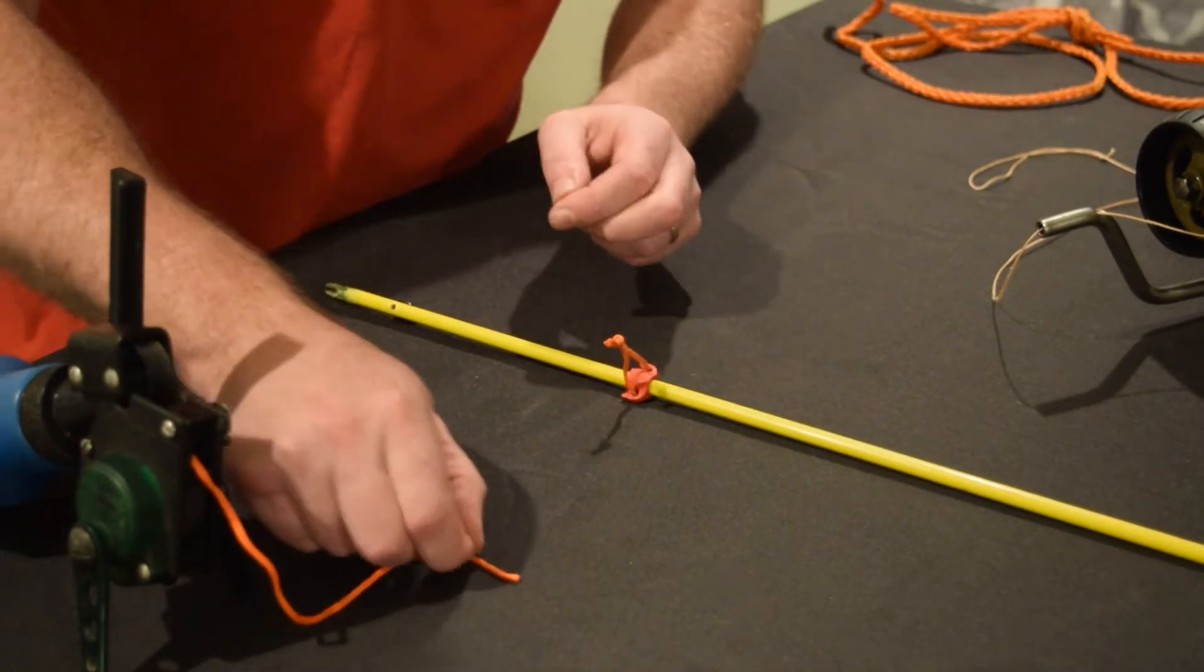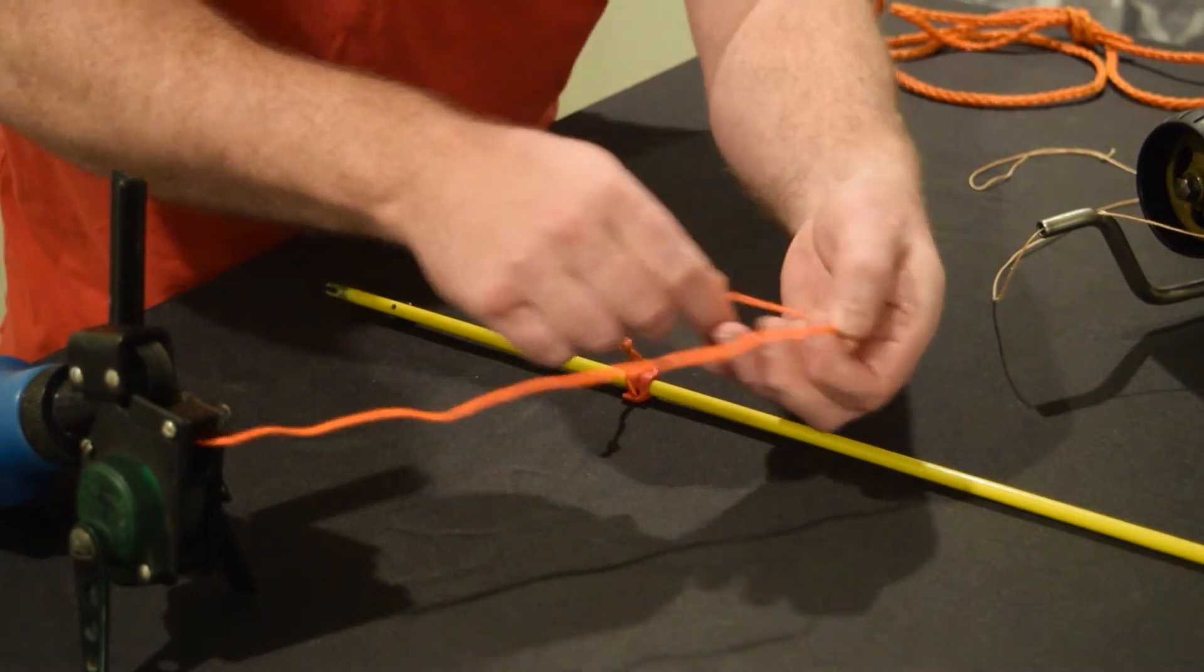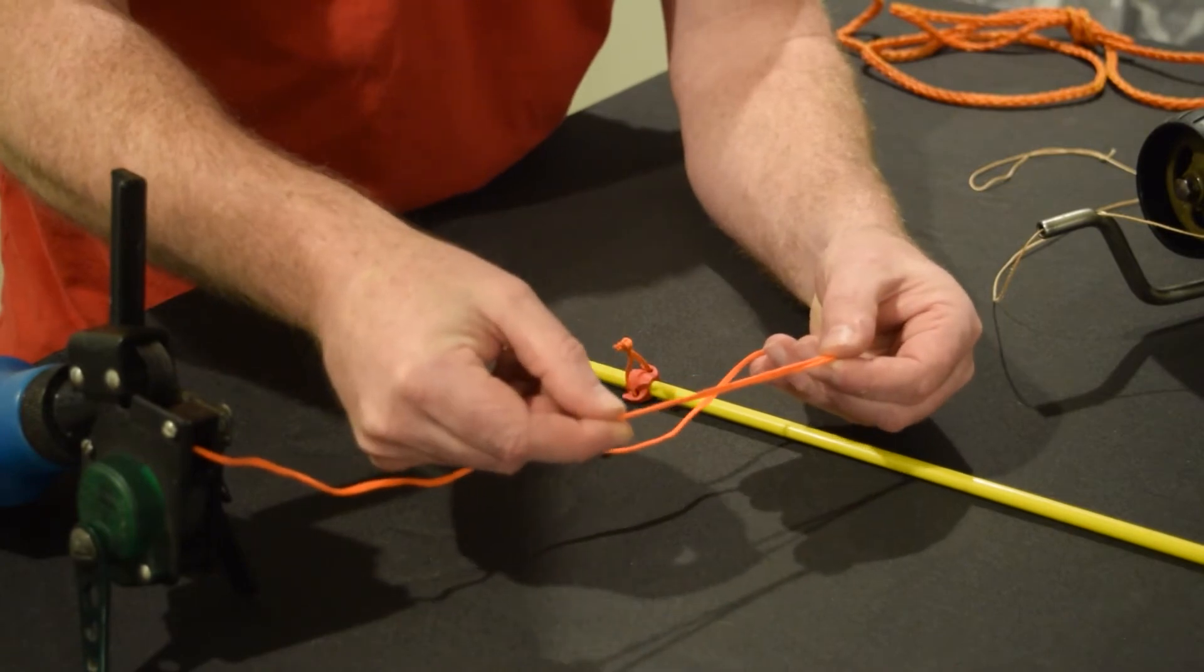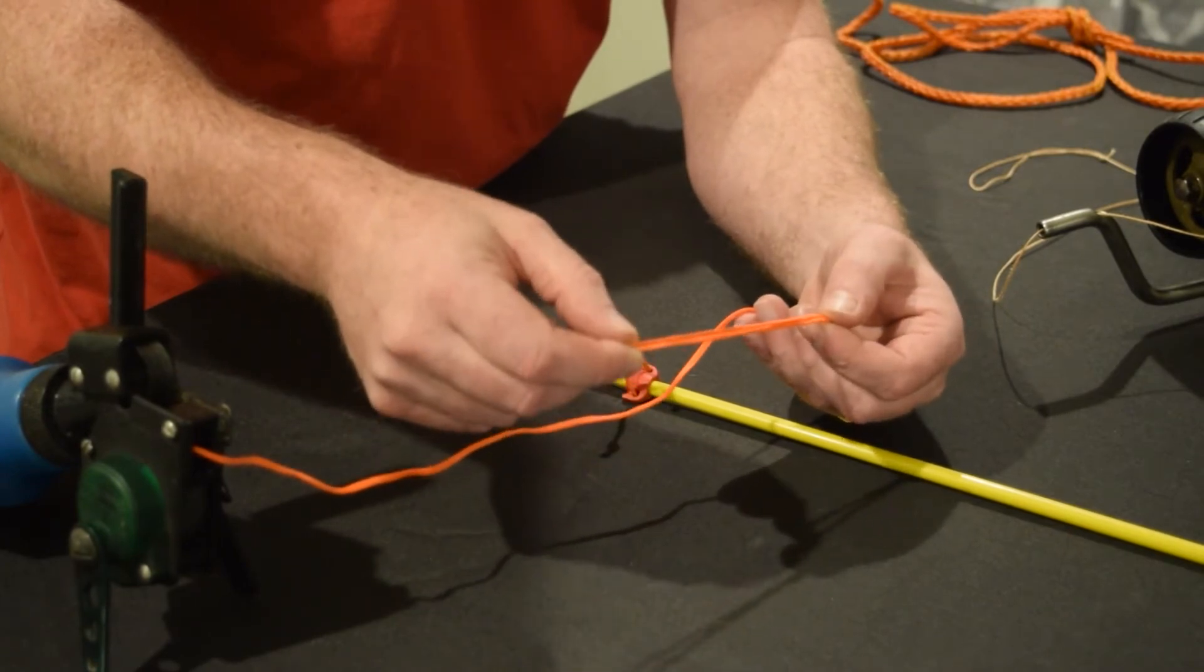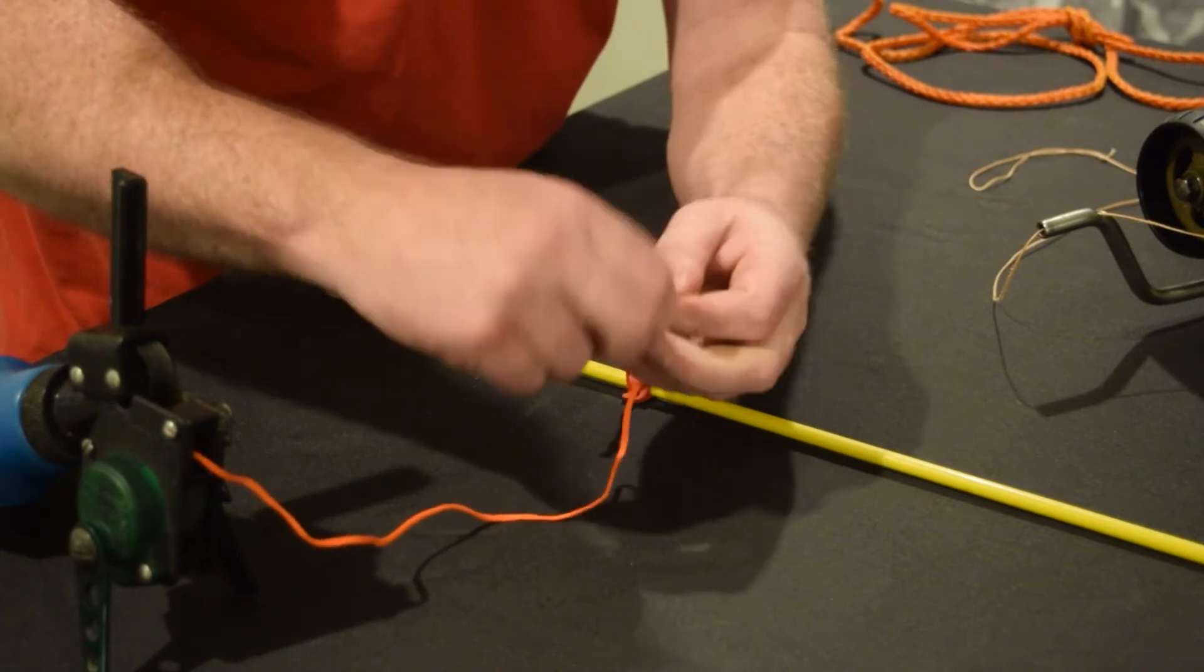Now on the reel itself, I'm going to take a little bit of line out. I am going to create a loop. This loop can be anywhere from three to four inches long. The size of this loop isn't as critical. And I'm going to tie an overhand knot in this line as well.